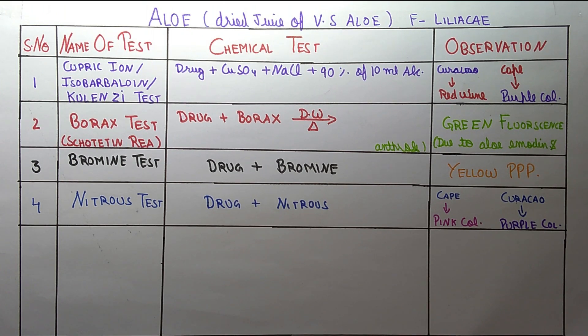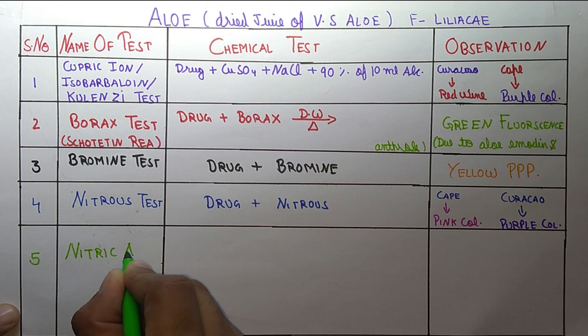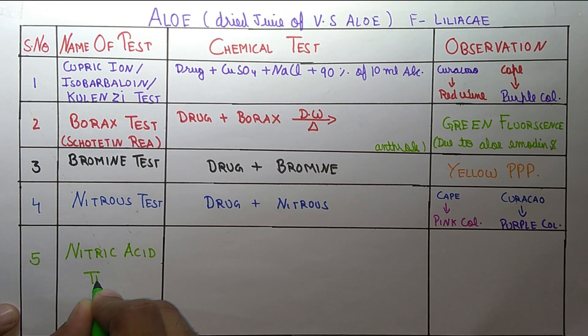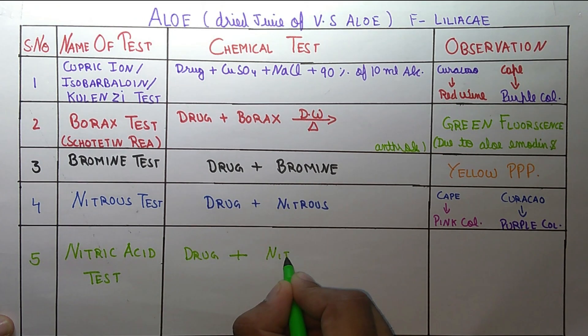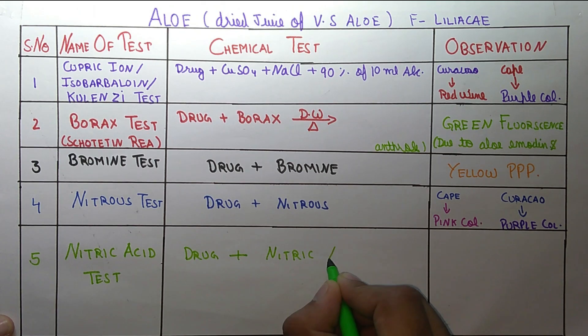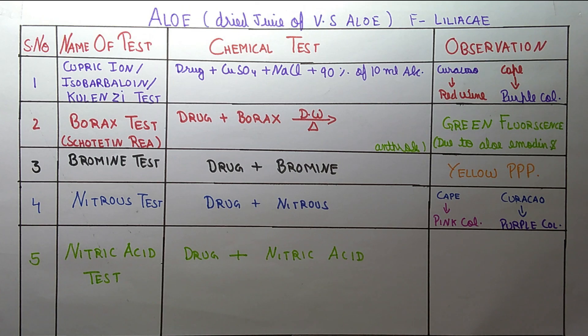Now coming on the fifth test of aloe, Nitric Acid test. In this we use drug plus nitric acid. As we all know that aloe has four varieties.